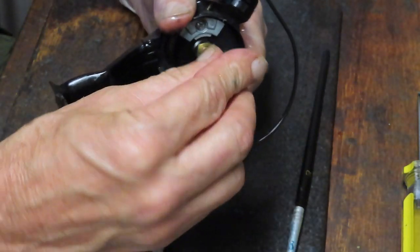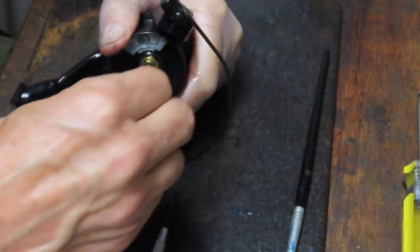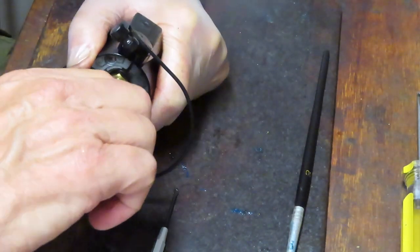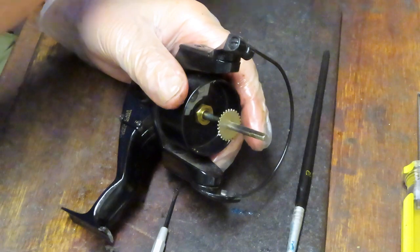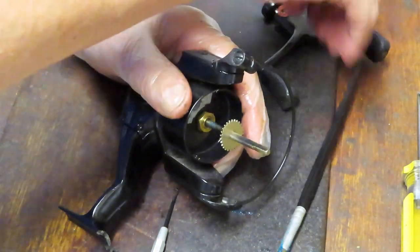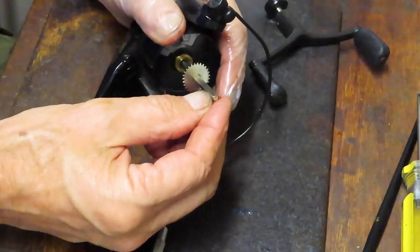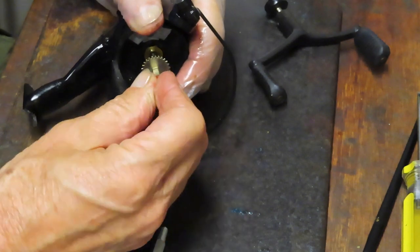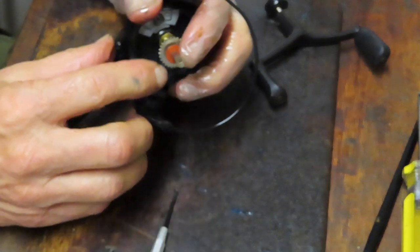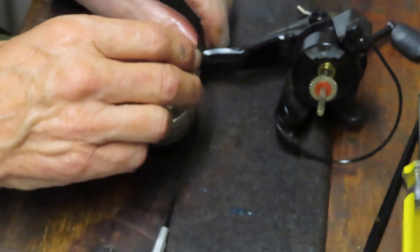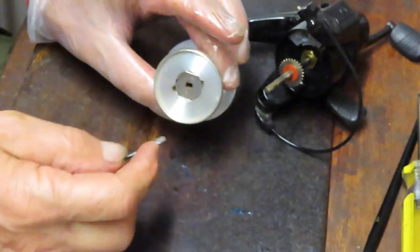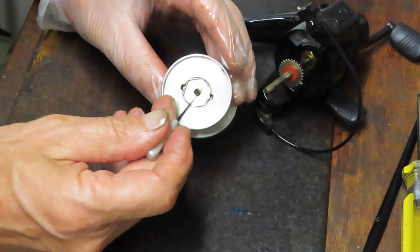And then there's a little washer that adjusts the spool height. That facilitates the line keeping it even as the spool is winding. So let's take a look at those washers then and see what we have.